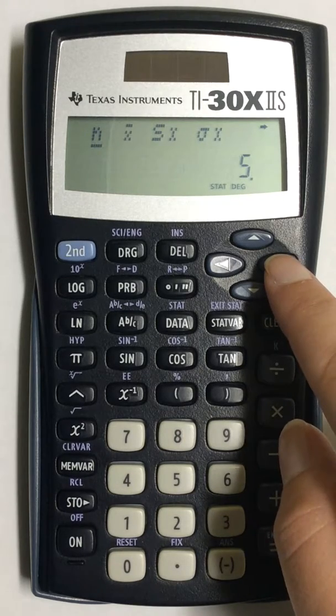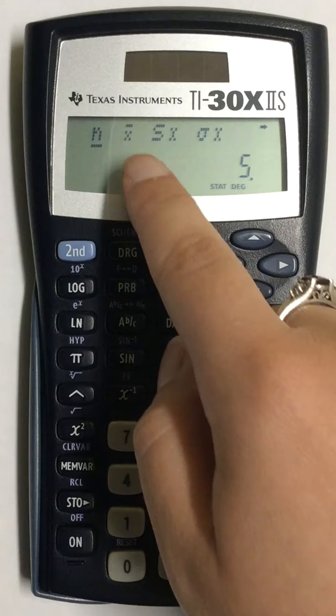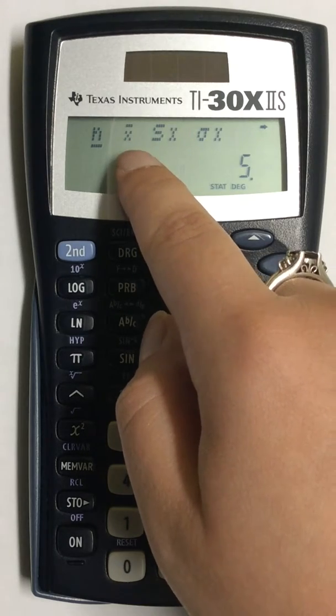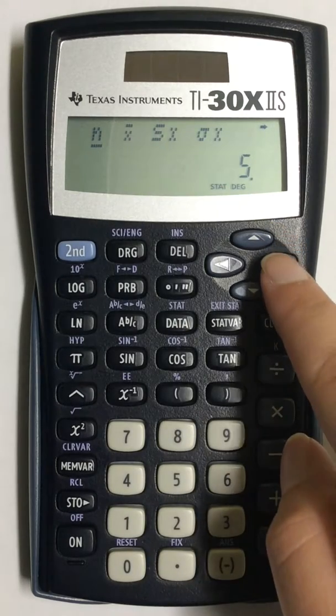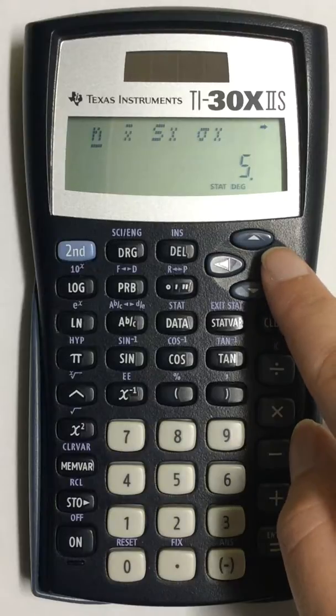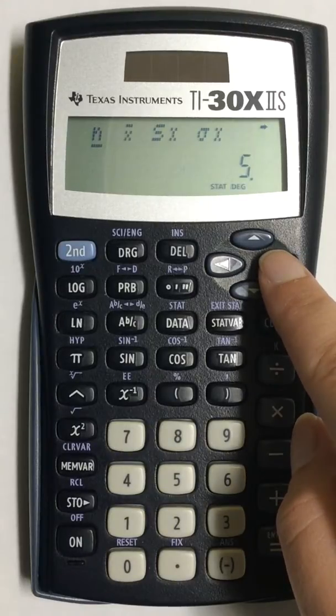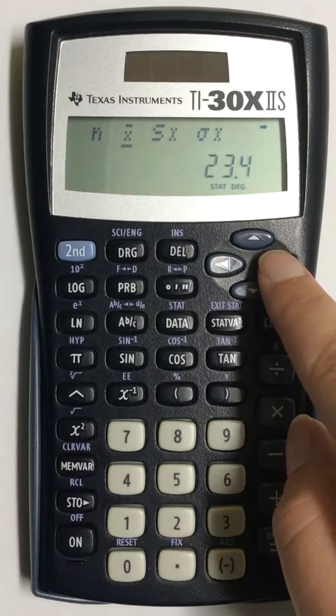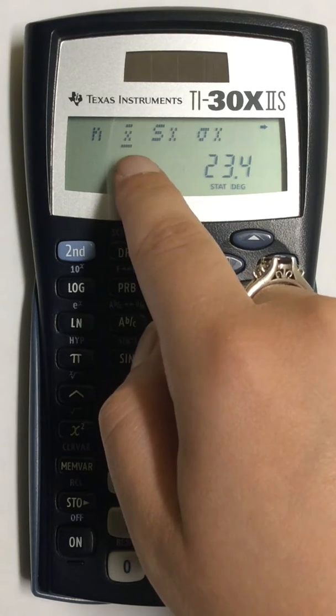I'm looking simply for my mean, which in this case is my X bar value. So if I'm looking for my X bar value all I have to do is move the over arrow to change where this line is.